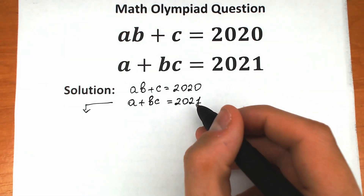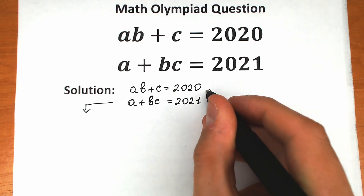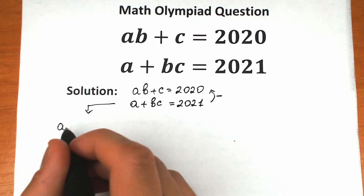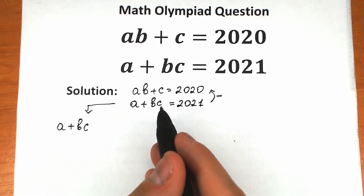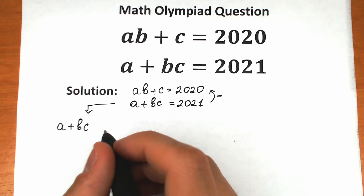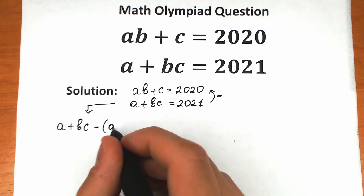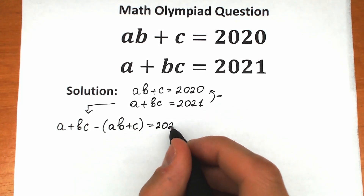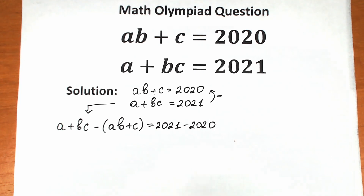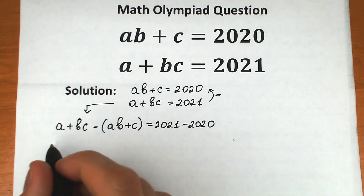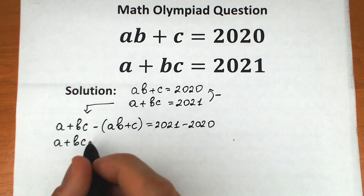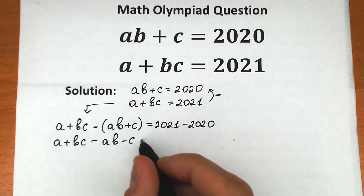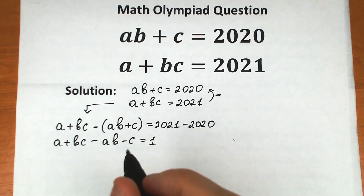Let's subtract the second equation from the first one. We have a plus bc, and we subtract ab plus c from it, so we get: a plus bc minus ab minus c. On the right-hand side we have 2021 minus 2020. Opening the parentheses, we get a plus bc minus ab minus c equal to one.